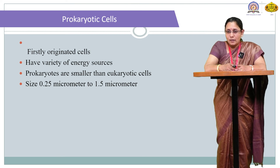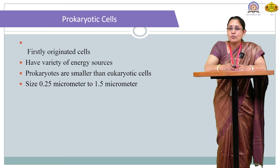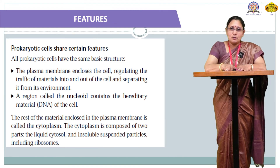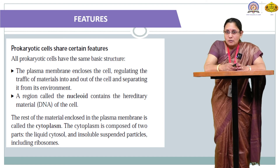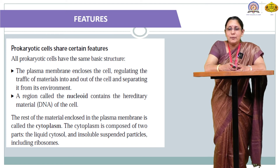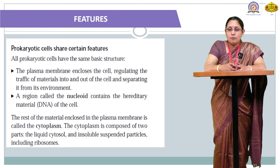Regarding the size of prokaryotic cells: prokaryotic cells are smaller than eukaryotic cells — roughly 0.25 micrometers to 0.5 micrometers in dimension. Prokaryotic cells share certain common features. All prokaryotic cells have the same basic structure, which includes the plasma membrane — the outermost covering that encloses the cell, regulating the traffic of material into and out of the cell and separating it from its environment.